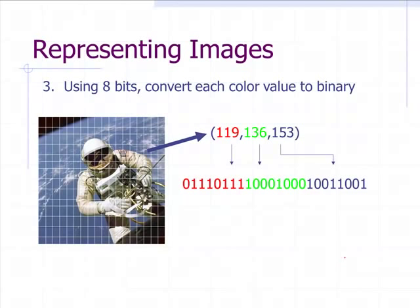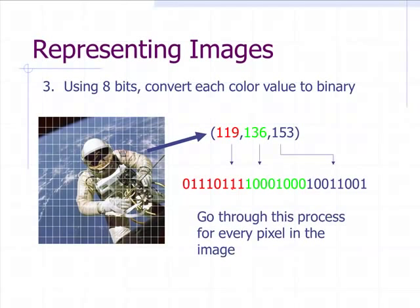All right, let's look at how we do this in binary. So now if I take this pixel, and I know I got the numbers 119, 136, and 156 for the red, the green, and the blue, I just take these numbers and I convert them into binary, and I store that information in the file. And I go through this process for every single pixel in the image.